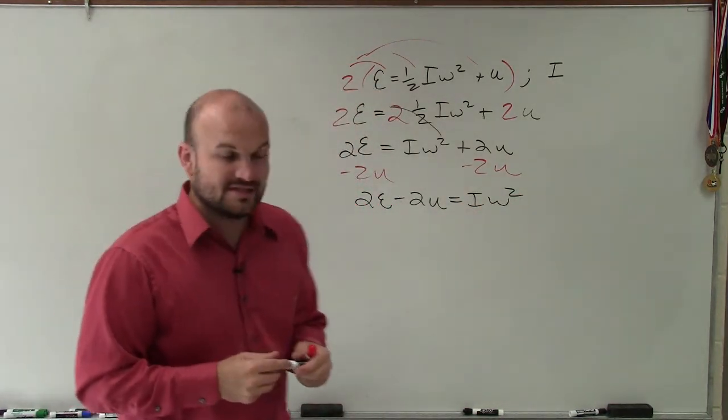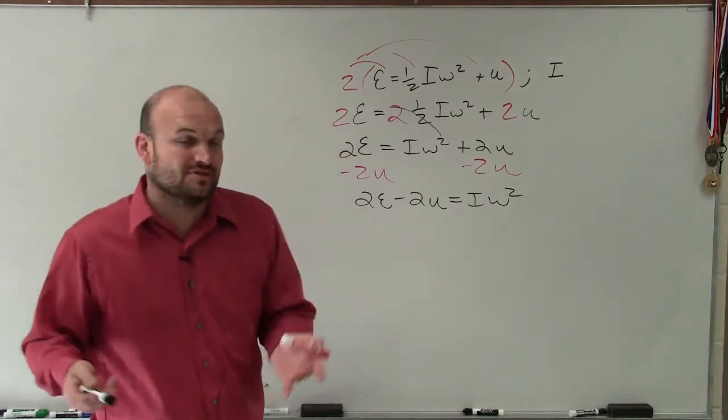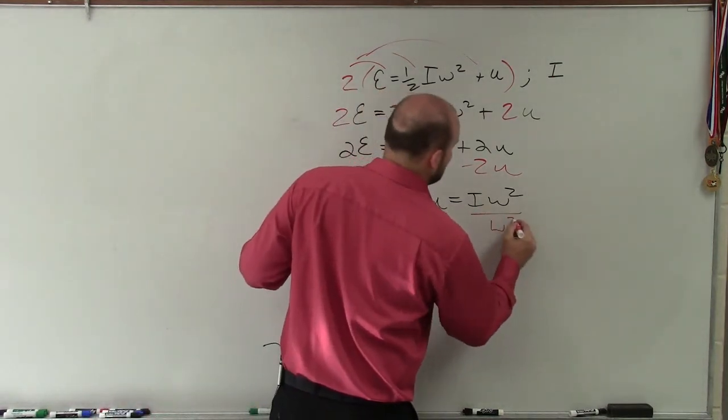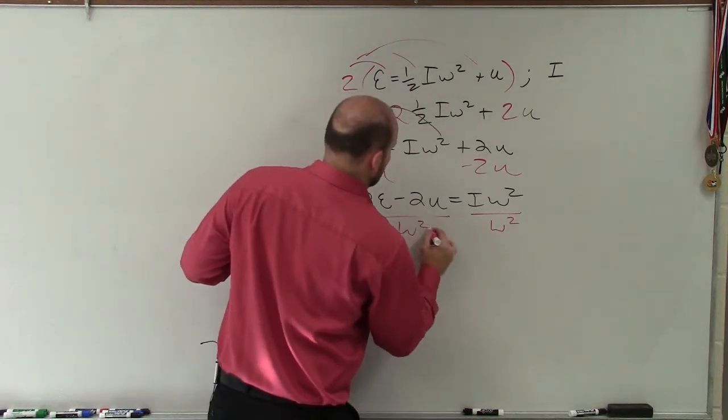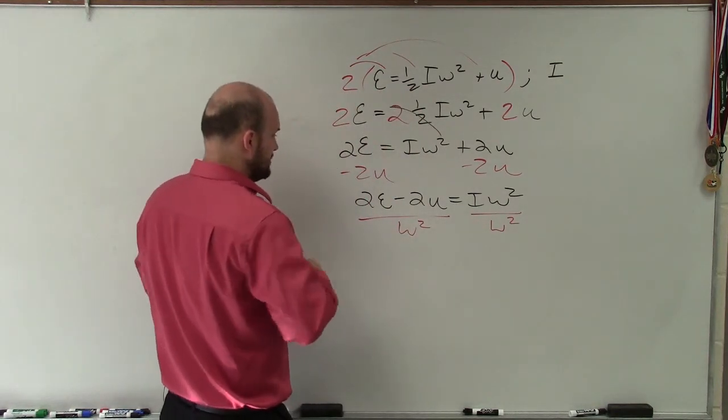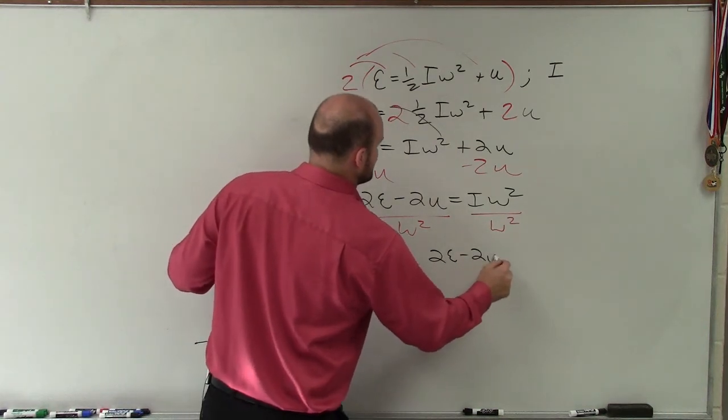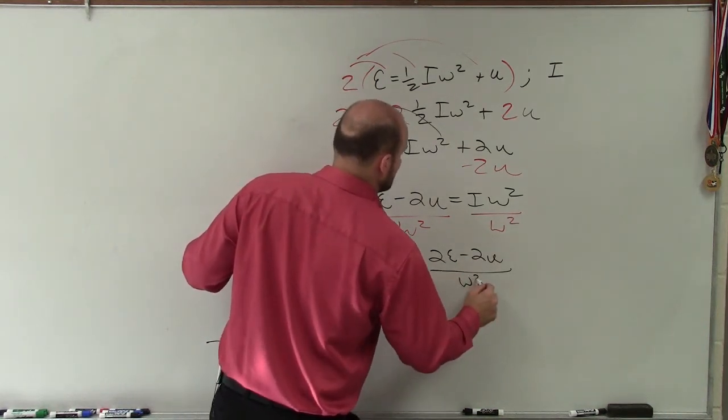Now I look at this and say, my variable is being multiplied by ω². To undo multiplication, I'll divide by ω². Therefore, my final equation is I = (2E - 2u)/ω².